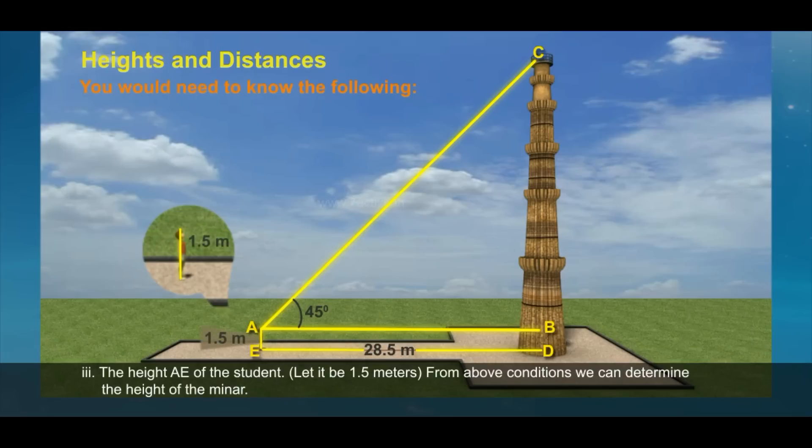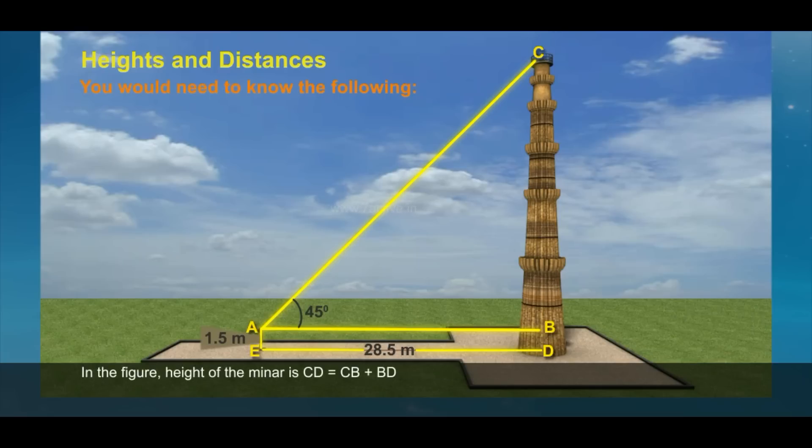From the above conditions, we can determine the height of the minar. In the figure, the height of the minar CD equals CB plus BD. To find BC, we will use trigonometric ratios of angle A.